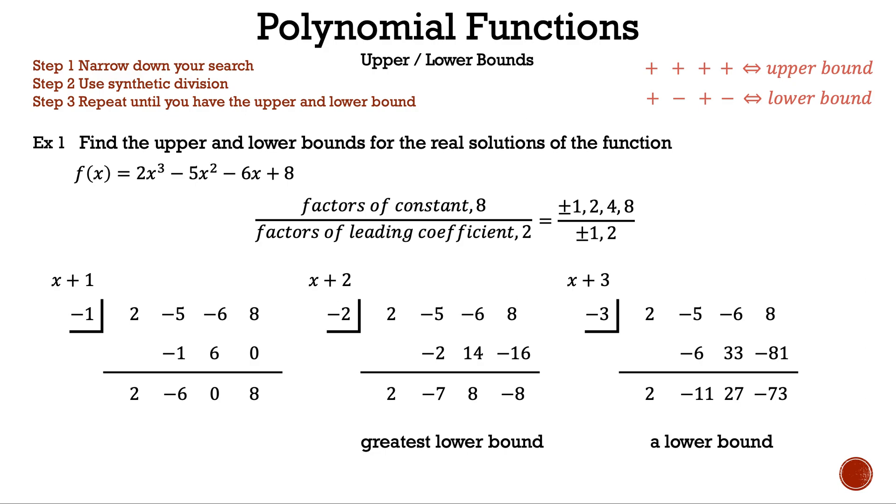Our result is a lower bound since the numbers on bottom alternate negative positive, since we have 2, -11, 27, -73. And if we keep going, we will continue to get lower bounds.